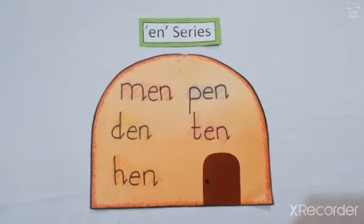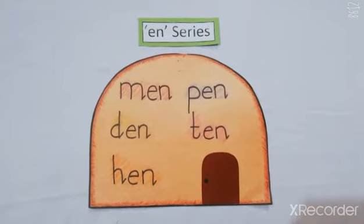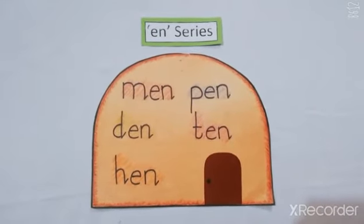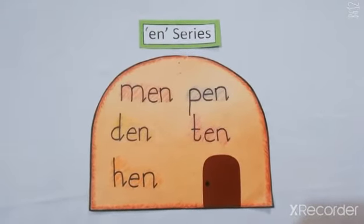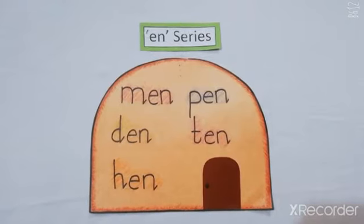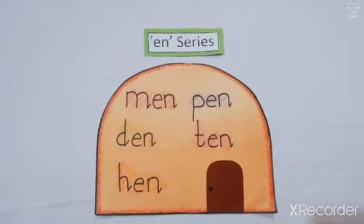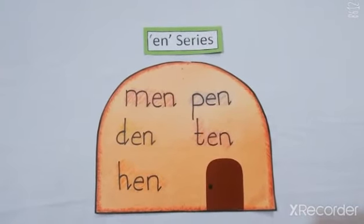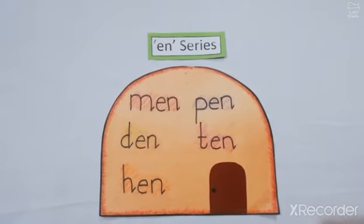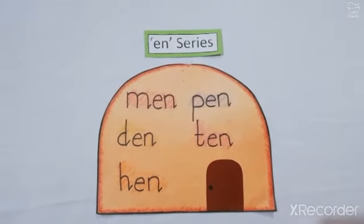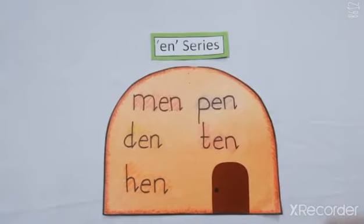Revise the EN series. E-N gives the sound of 'en'. M-E-N, men. P-E-N, pen. D-E-N, den. T-E-N, ten. H-E-N, hen. Men, pen, den, ten, hen.